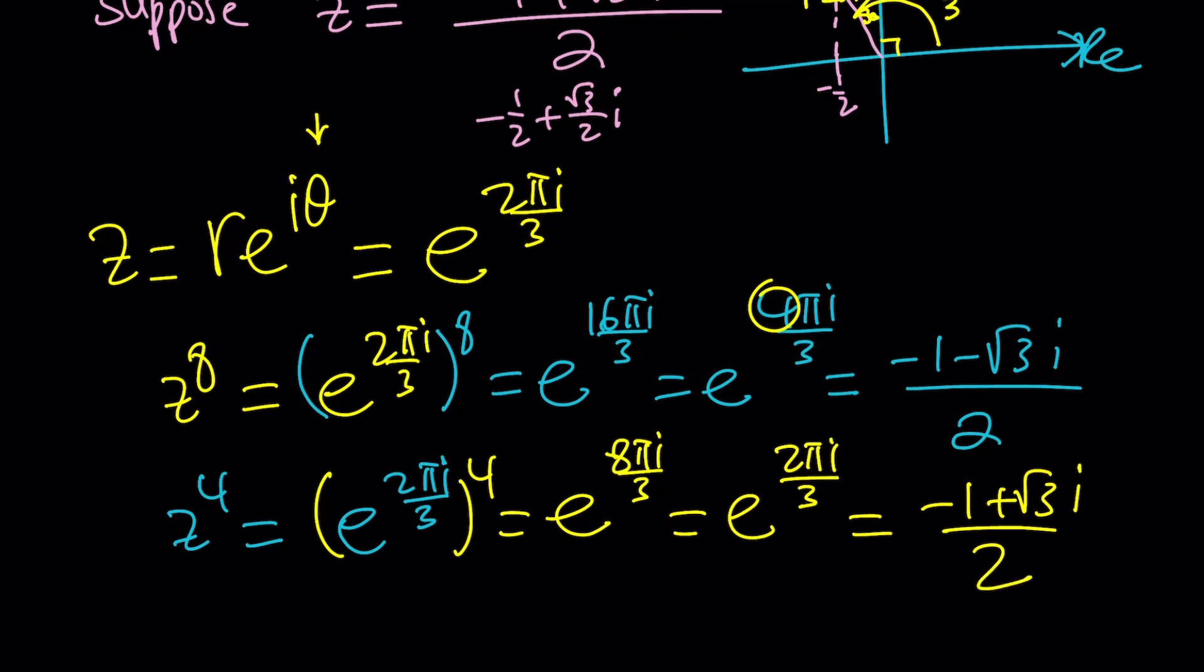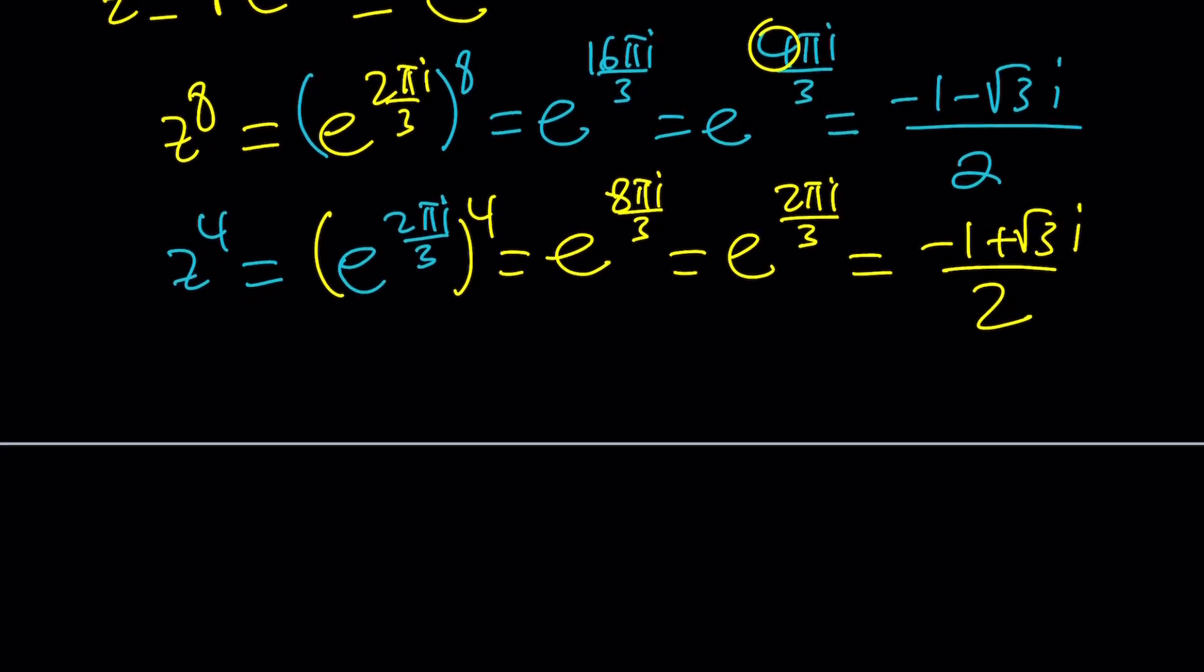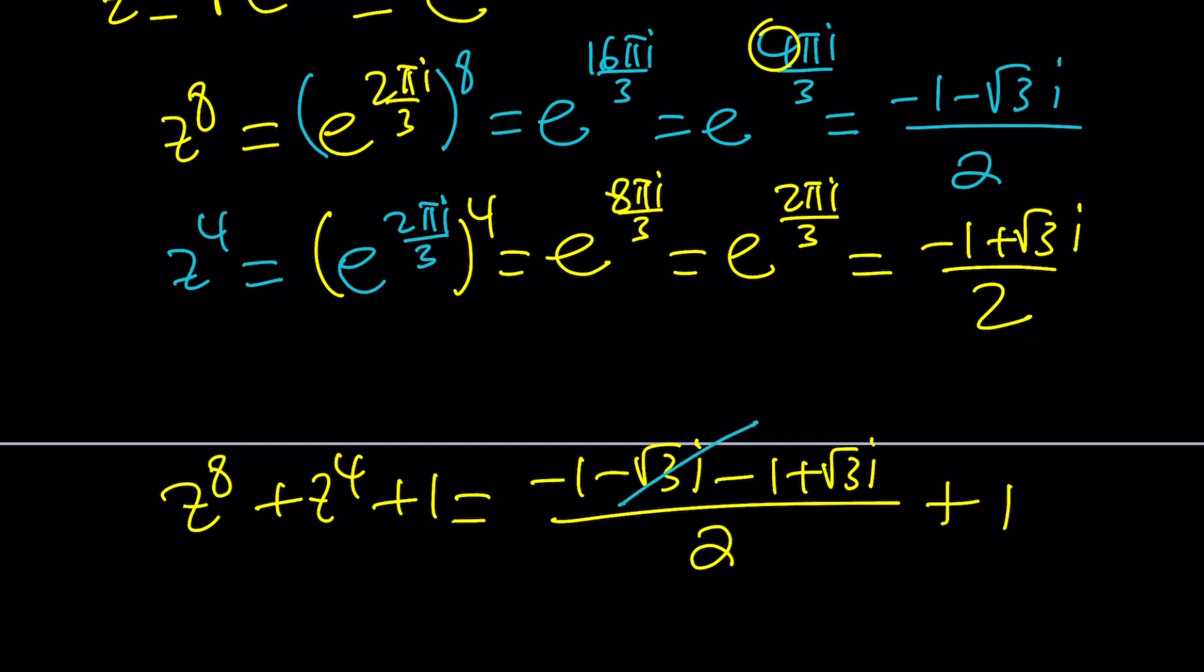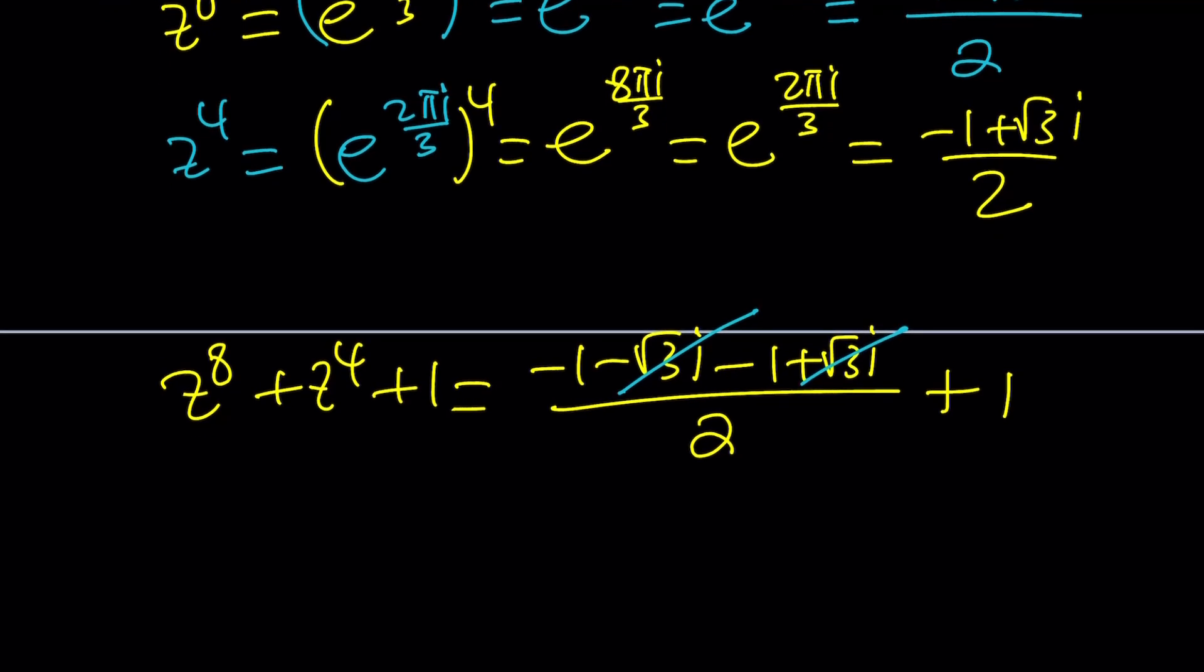Awesome. z to the eighth and z to the fourth are ready to go. So let's go ahead and evaluate this sum. z to the eighth is negative 1 minus root 3 i. And since they have a common denominator, I can just combine them and then just add the 1. You could also make a common denominator. No big deal. But notice something. These two radicals cancel out, leaving us with negative 2 over 2, which is negative 1 plus 1. And guess what? That equals 0.